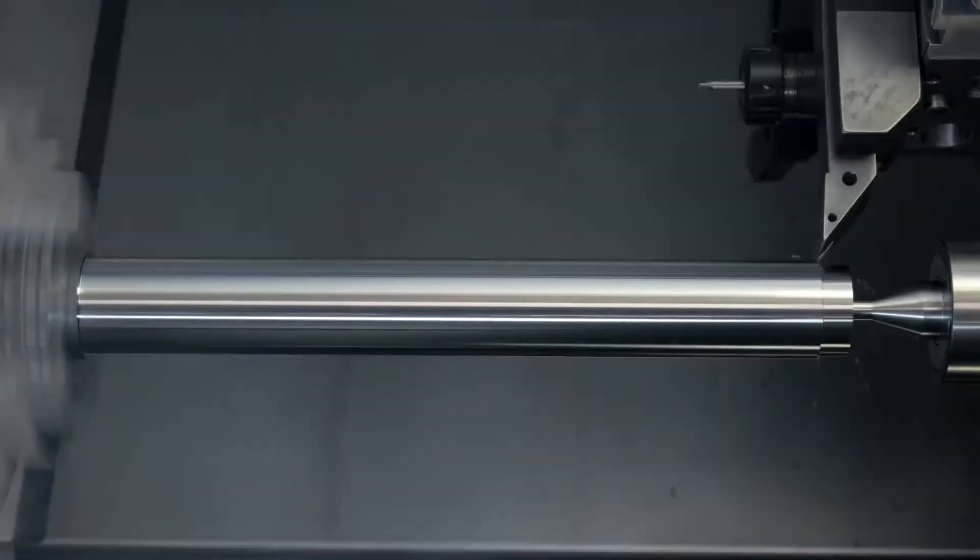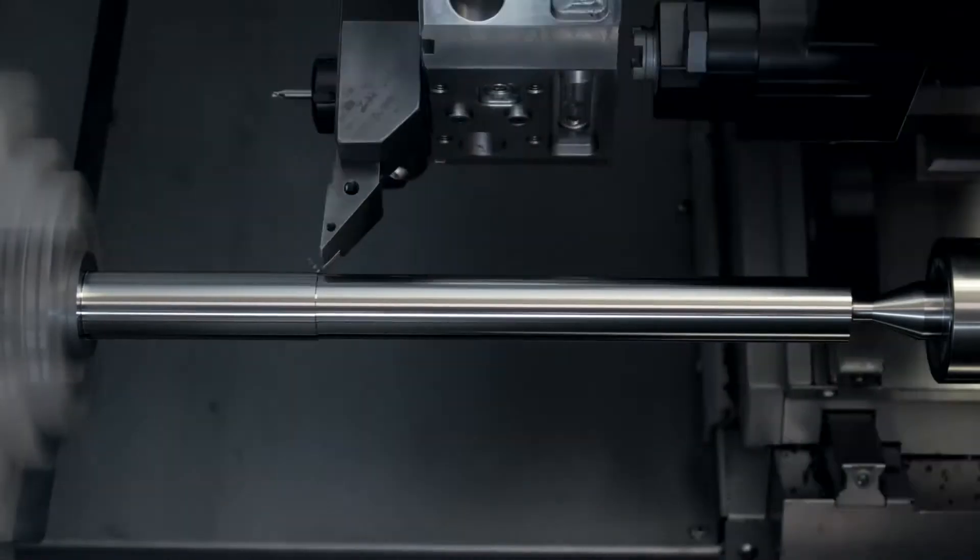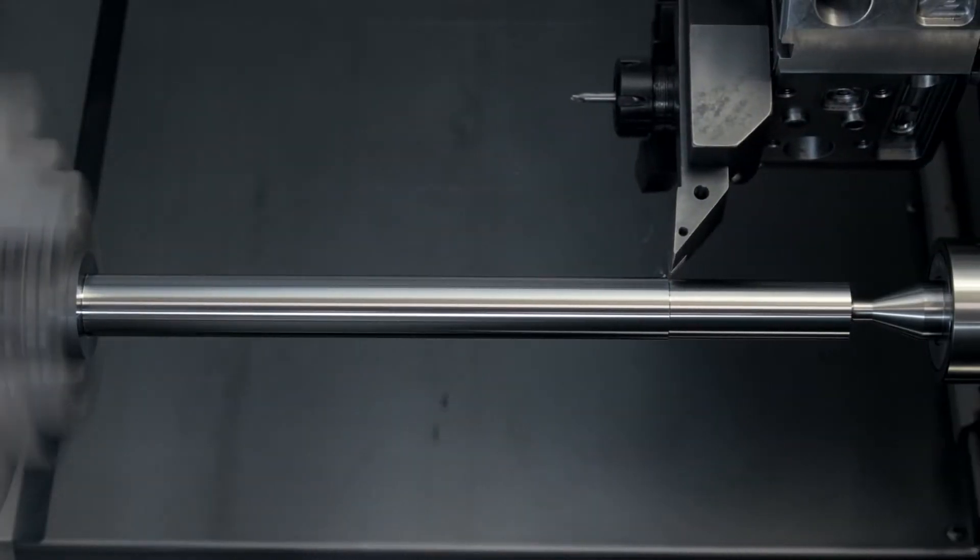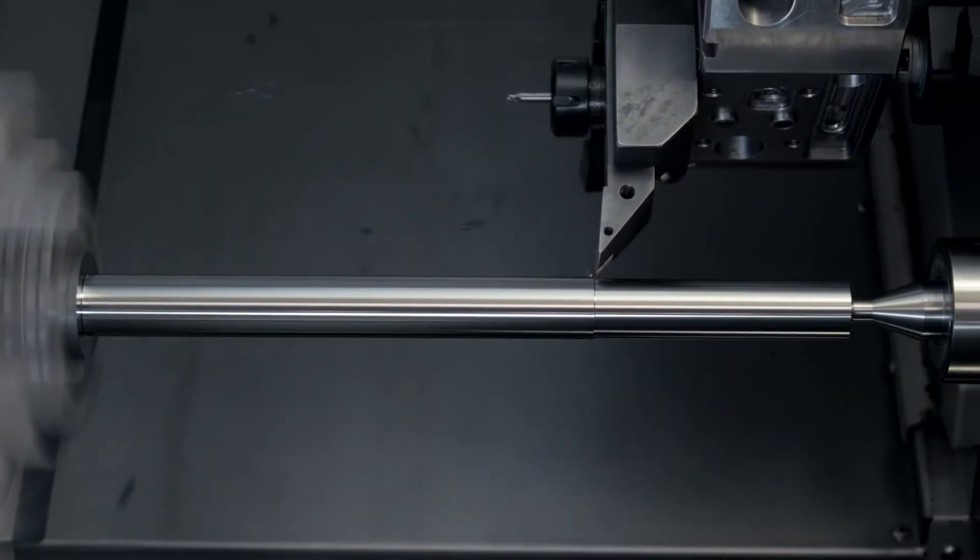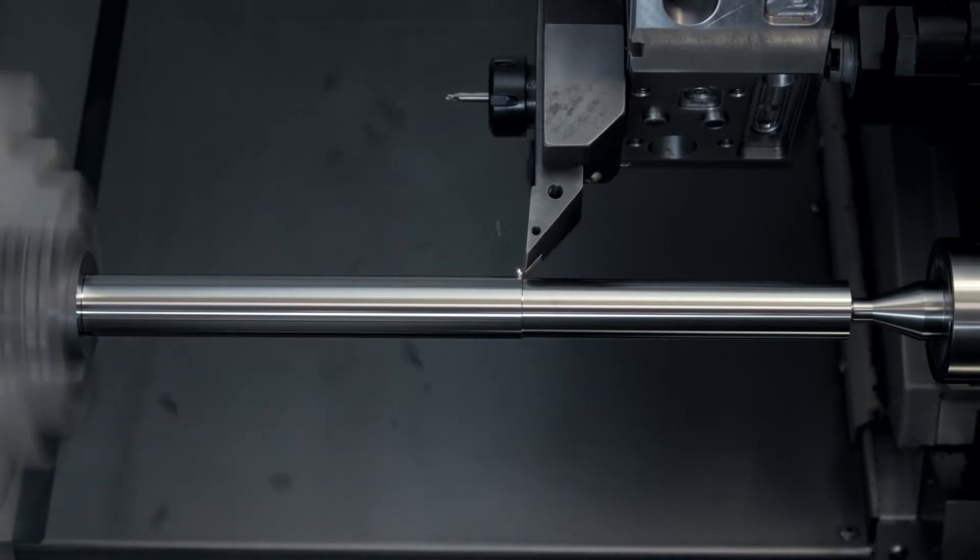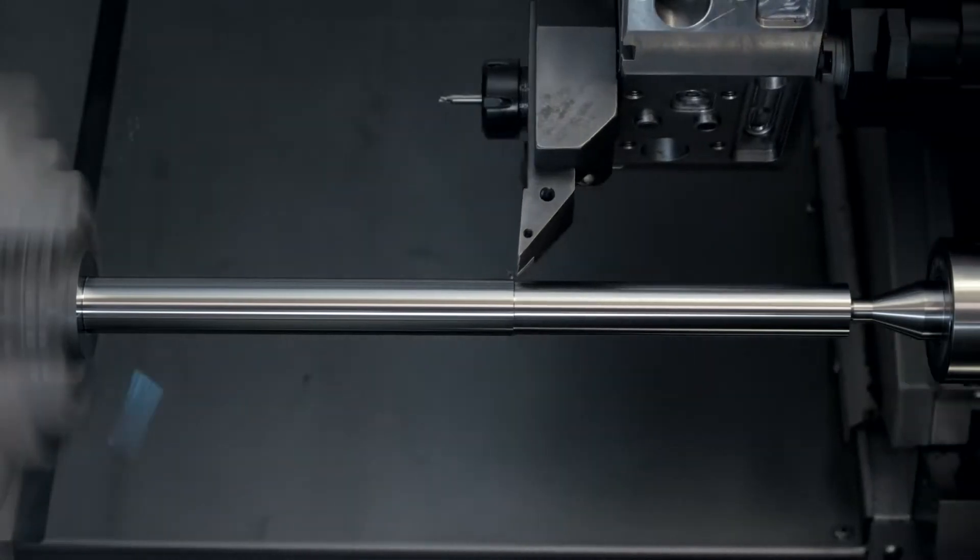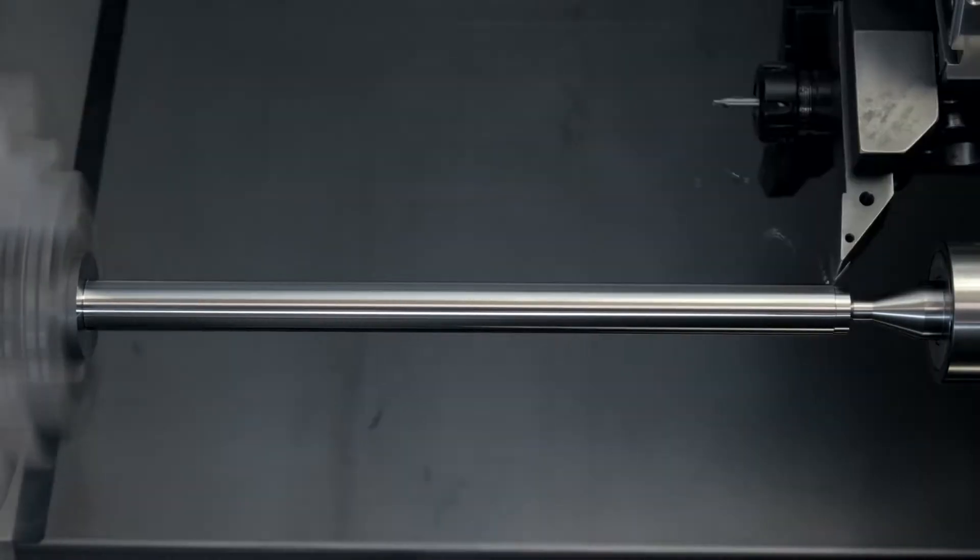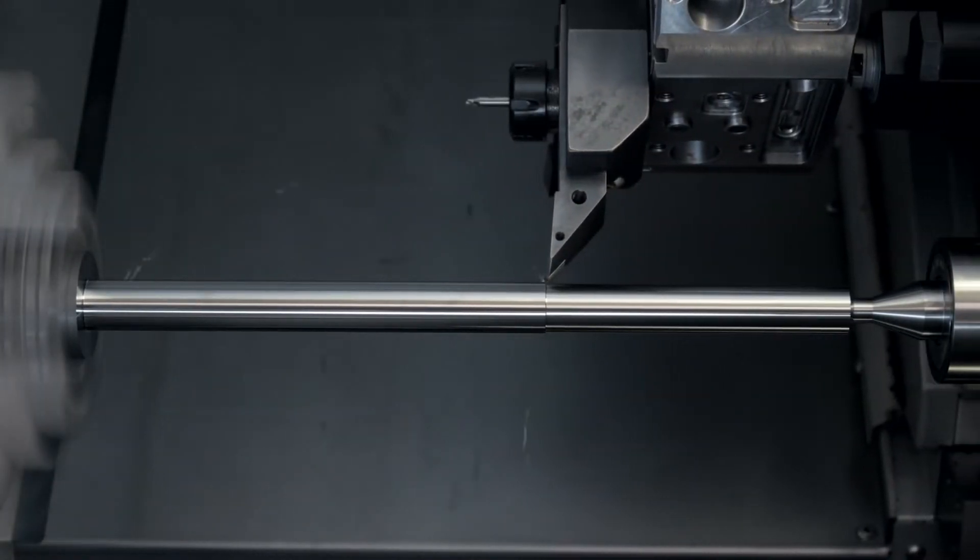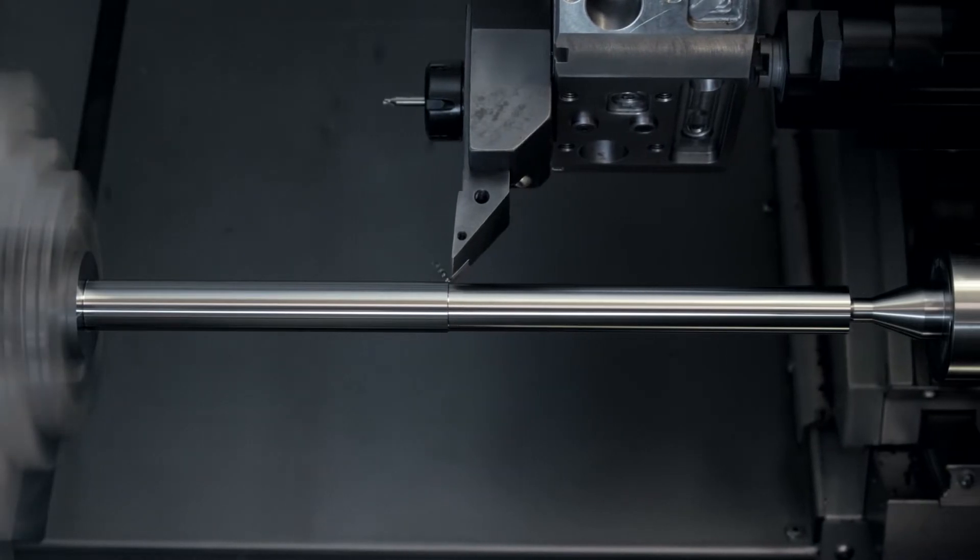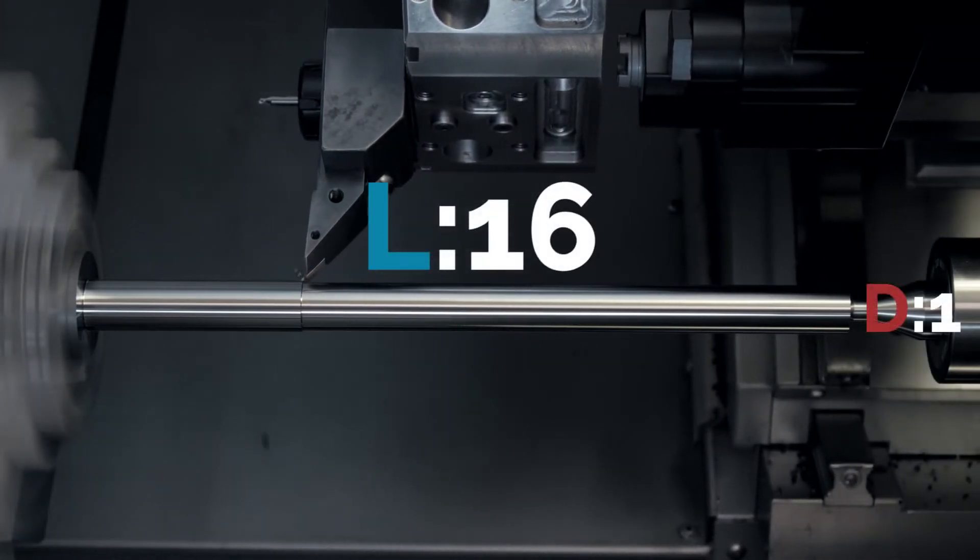With SSV off, we begin to get chatter at a diameter of 1.12 inches. Just to make sure we've got some decent chatter going, we'll take several more cuts until we're down around an inch diameter. Our test bar is now chattering quite seriously. The LTD ratio of this setup is now 16 to 1.